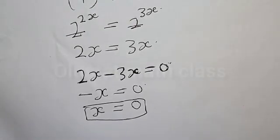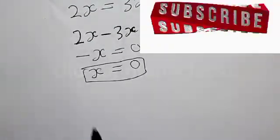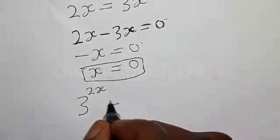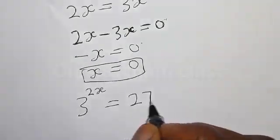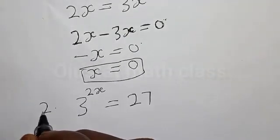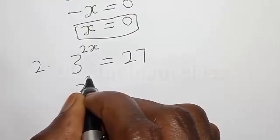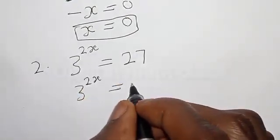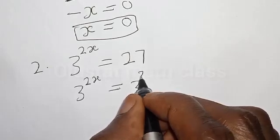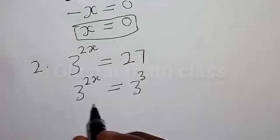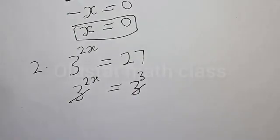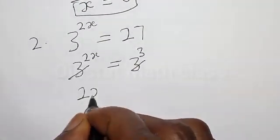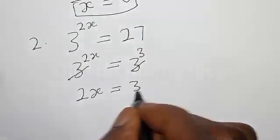For the second question we have: 3 raised to power 2s is equal to 27. This can be expressed as 3 raised to power 2s is equal to 3 raised to power 3. Now they have the same base, so the bases cancel. Then we have 2s is equal to 3.